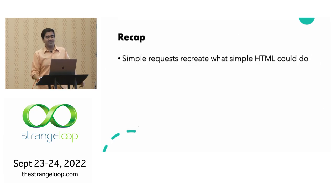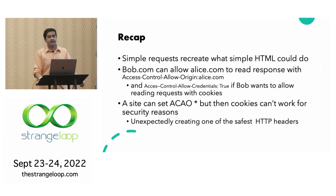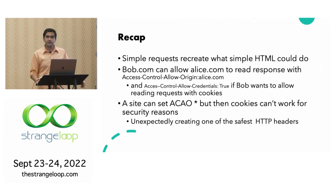Recapping: simple requests were created to recreate what simple HTML could already do. bob.com can allow alice.com with Access-Control-Allow-Origin alice.com, and add allow credentials if they also want to allow requests with cookies. You can set ACAO star, but requests with cookies will fail — and this is one of the safest HTTP headers you can set.